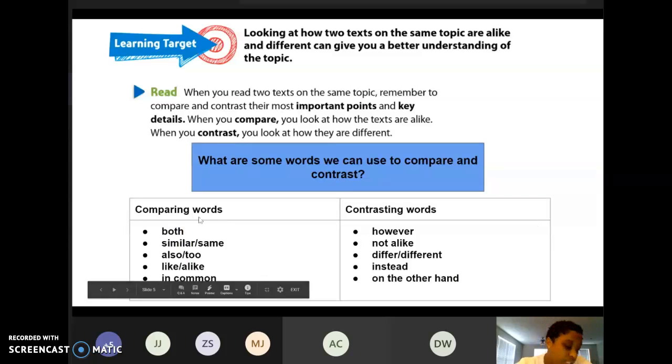So these are some clue words that you guys can use to compare and contrast. Comparing words: you can say both, similar or same, also or two, like and alike, or in common. These words you're using to compare, to show what two things have in common. Contrasting words: however, not alike, differ, different, instead, or on the other hand. You use these words to contrast or tell how two things are different from one another.